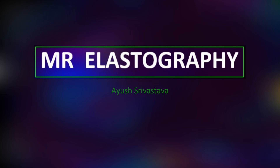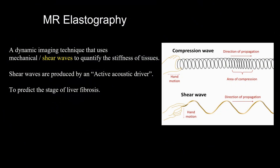We will talk about MRI elastography in this video. First of all, what is elastography? It is a technique to measure stiffness of the tissues. In MRI elastography we use mechanical waves, which are of two types: compression and shear waves. Here we use shear waves to quantify the stiffness of tissues.